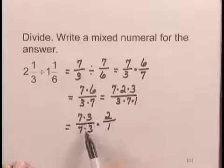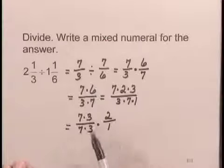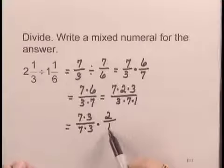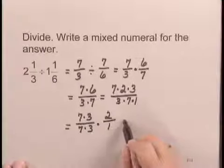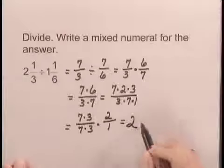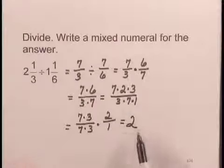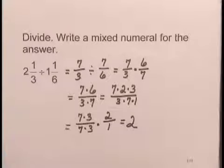7 times 3 over 7 times 3 is 1. 2 over 1 is 2. 1 times 2 is 2. 2 has no fractional part so it is in the correct form, and it is the quotient of 2 and 1/3 and 1 and 1/6.